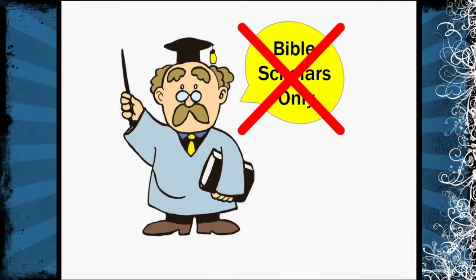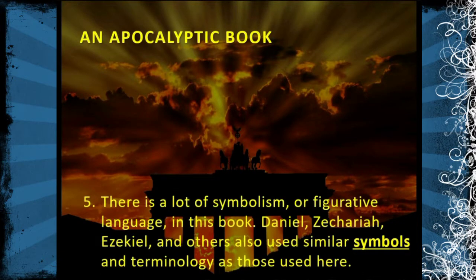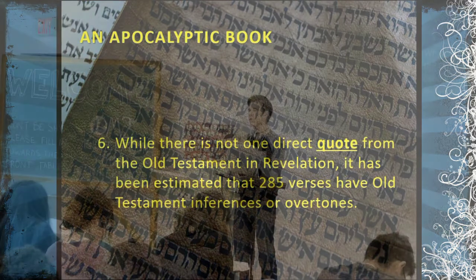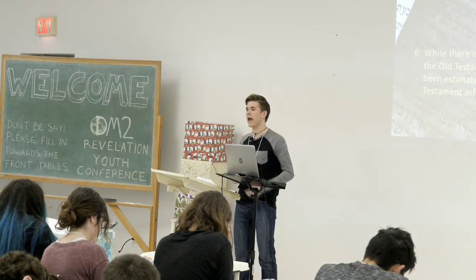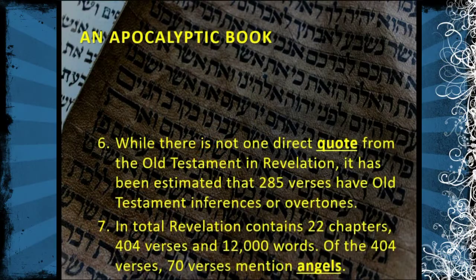There is a lot of symbolism and figurative language in the book. Daniel, Zachariah, Ezekiel, and others also use similar symbols and terminology. There is not a direct quote from the Old Testament in Revelation, but it has been estimated that 285 verses have Old Testament overtones — using the same titles, examples, and figurative language about things like the temple and the lamb. In total, Revelation contains 22 chapters, 404 verses, and 12,000 words. Of the 404 verses, 70 mention angels.